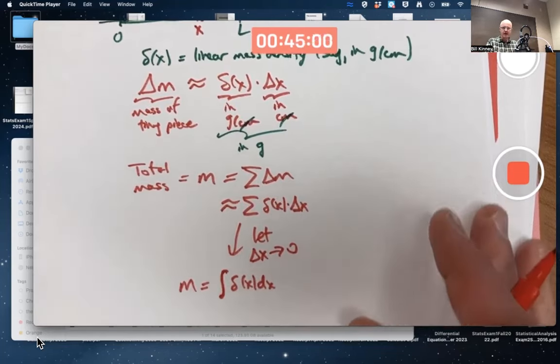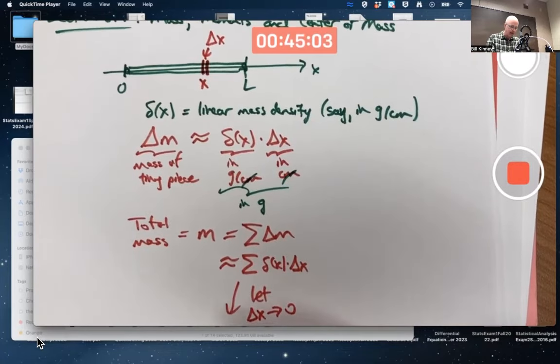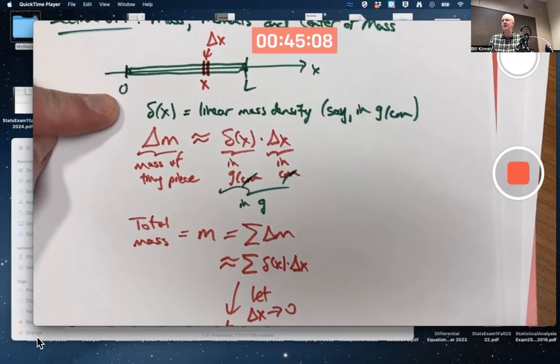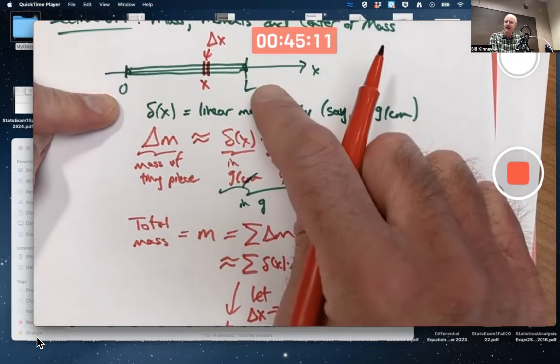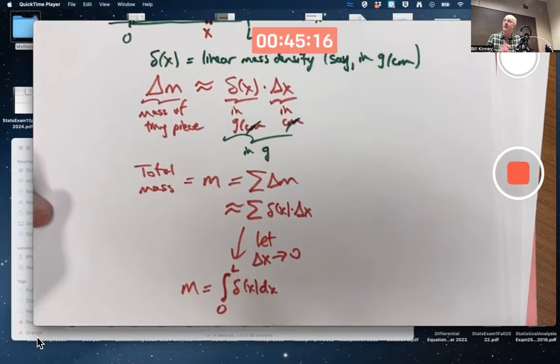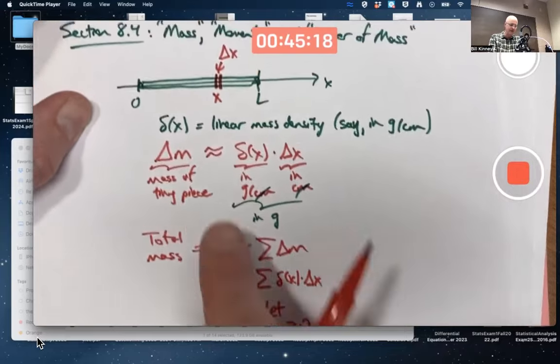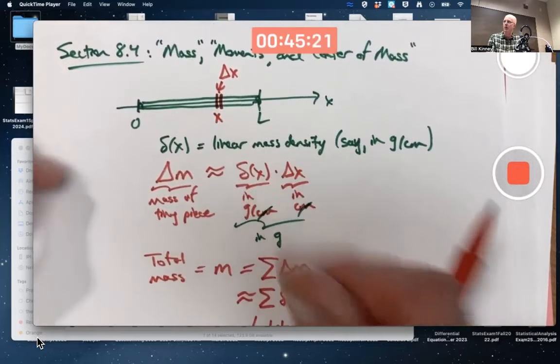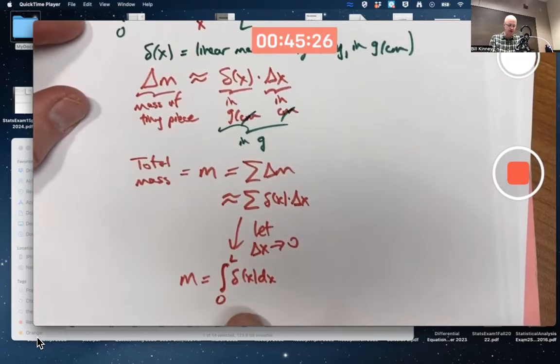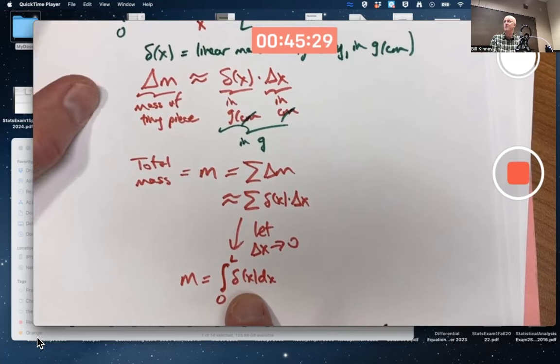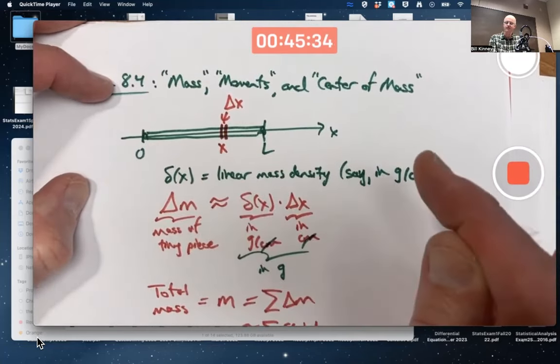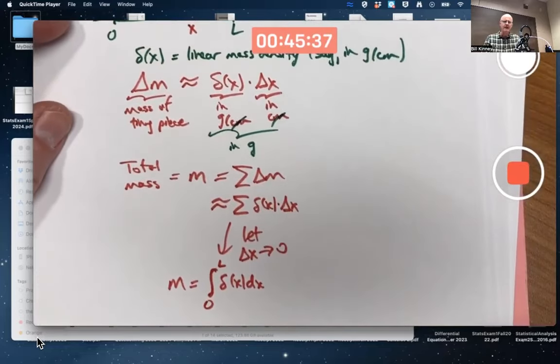You'll get the integral over whatever interval you're integrating over, in this case from zero to L. If I had picked my coordinate system differently, say if that was seven and this was seven plus L, I could still do all this and integrate from seven to seven plus L, though the δ(x) function would change according to that change of coordinates. That'll be the mass.